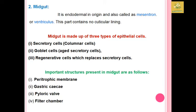After the foregut, we look at the midgut, which is of endodermal origin, also known as mesenteron or ventriculus. There is no cuticular lining in the midgut as there is in the foregut. The midgut is made up of three types of cells: secretory cells, goblet cells, and regenerative cells, which replace the secretory cells after aging.